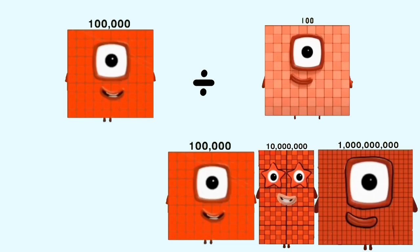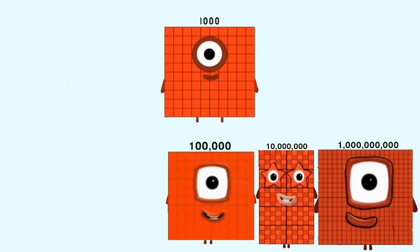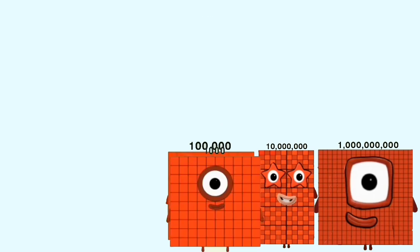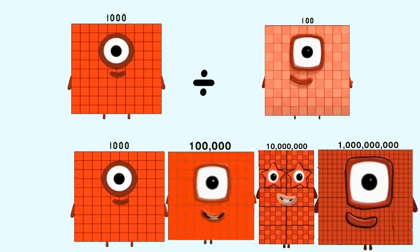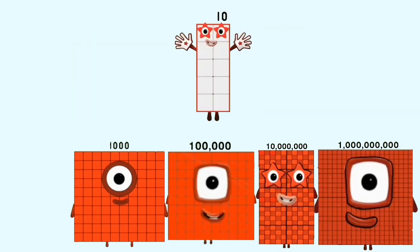100,000 divided by 100 equals 1,000. 1,000 divided by 100 equals 10.